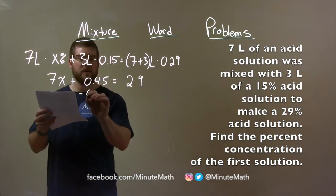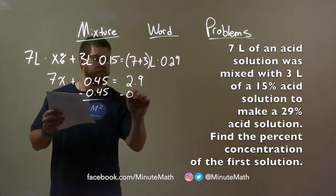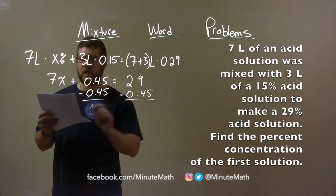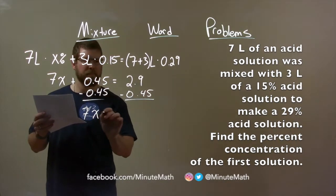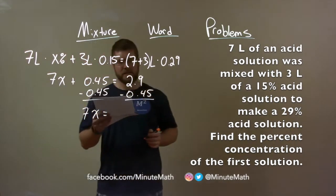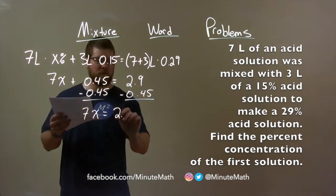We have to subtract 0.45 from both sides, and 7x just comes down, and 2.9 minus 0.45 is 2.45.